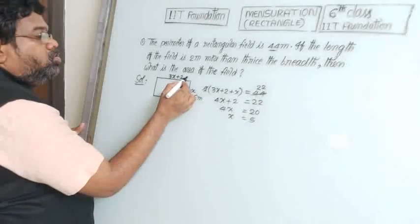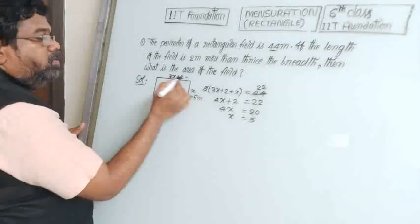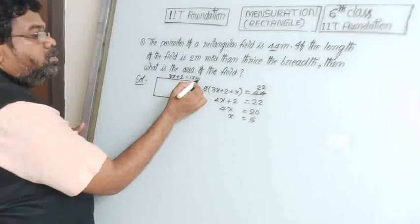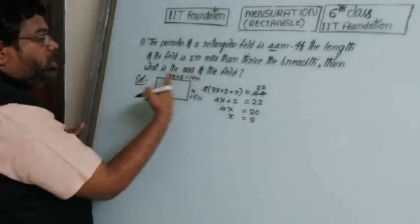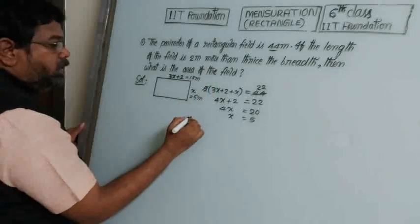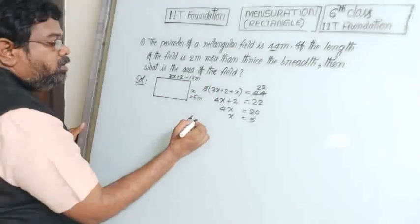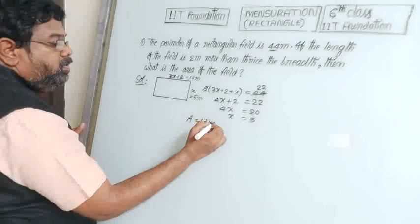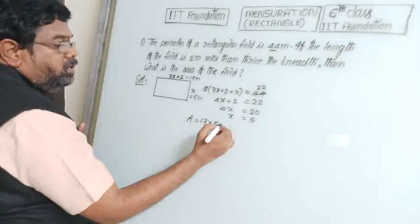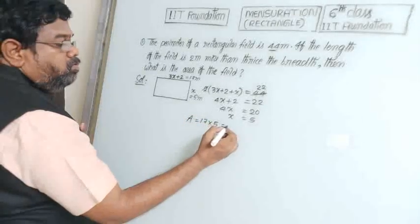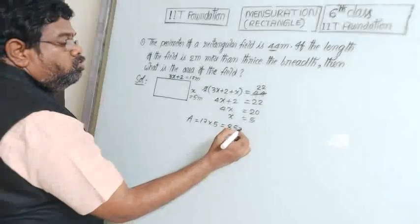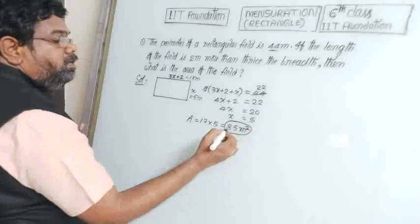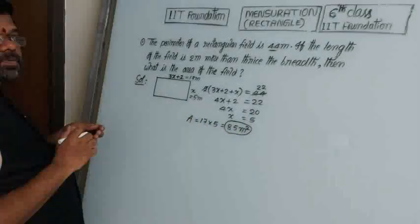Length is 3x plus 2: so 3 into 5 is 15, plus 2 is 17 meters. We require the area of the field. Area equals length into breadth: 17 into 5 equals 85 square meters.